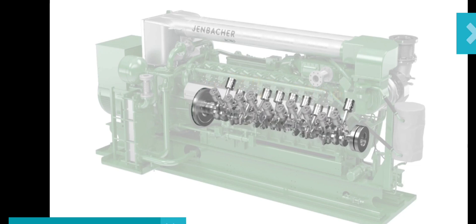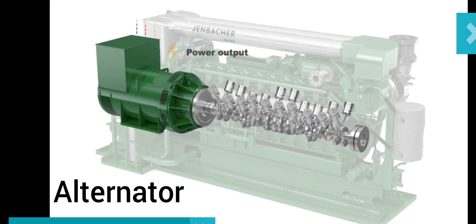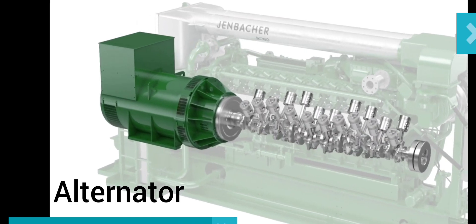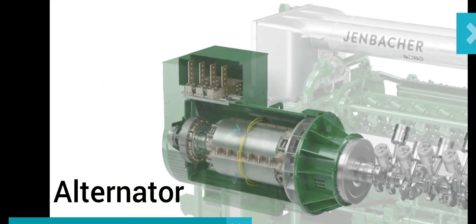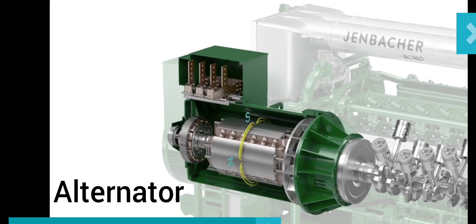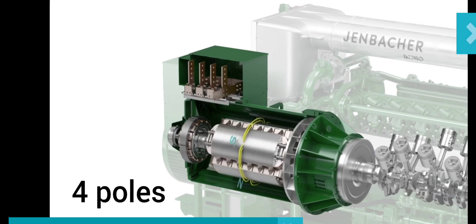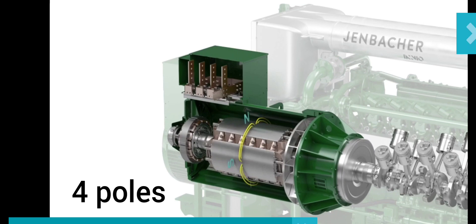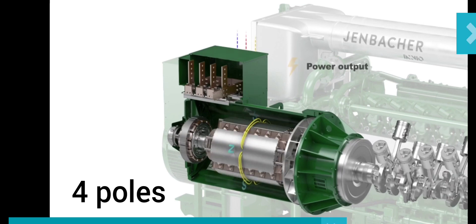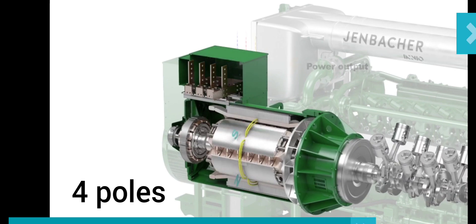This in turn drives the generator which turns mechanical energy into electrical energy. At the heart of the generator are four rotor coils positioned equally around the rotor shaft. These generate a magnetic field with two north and two south poles. As this magnetic field spins past static coils in the stator of the generator, they induce an electrical alternating current.